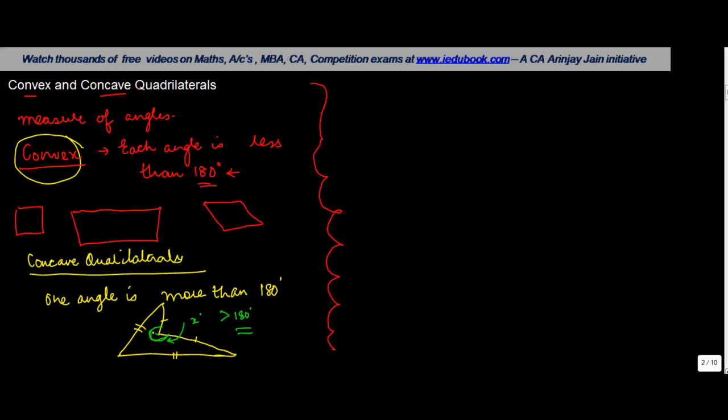Because if you draw a straight line like this, this portion will be 180 degrees, but this is more than 180 degrees. So these are the concave quadrilaterals. Simultaneous to this is also the concept of the interior and exterior of a quadrilateral.